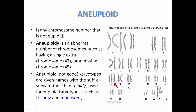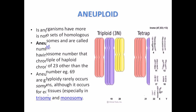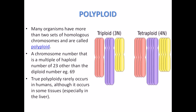Aneuploidy is the abnormal number of chromosomes involving a single extra chromosome or deletion of one chromosome. For example, if chromosome 13 should have two copies but instead has an extra one, the overall chromosome count becomes 47 instead of 46. If one is deleted it becomes 45. Both cases are called aneuploidy — deletion or addition of a single chromosome — whereas polyploidy involves increment in the number of sets.